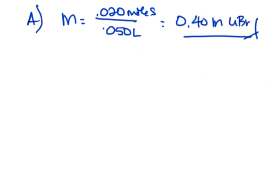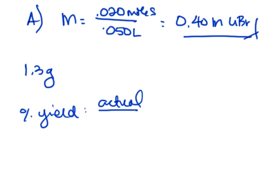For part B, we needed to find the percent yield when 1.3 grams is isolated. Percent yield is actual yield over theoretical yield times 100%, and this is your percent yield.